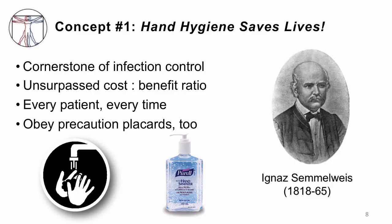Hand hygiene is the cornerstone of what we do in infection control. There's nothing as cheap, effective, and good for your patients as clean hands. It was Ignaz Semmelweis who figured this out — an obstetrician in Austria who realized that women delivered by his medical students were at much higher risk of mortality due to puerperal fever. His students were going to the autopsy suite, handling women dying of group B streptococcal infection, then returning to deliver more children without any hand hygiene. He proved that hand washing dramatically decreased mortality, yet he died imprisoned in an insane asylum, beaten to death by guards because no one would believe him. Every patient, every time — please think of him.